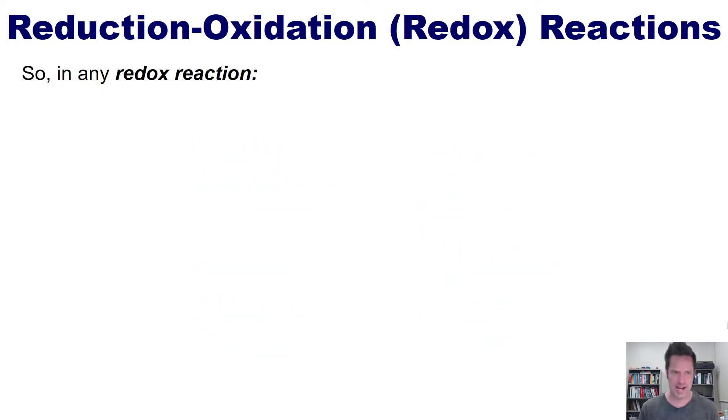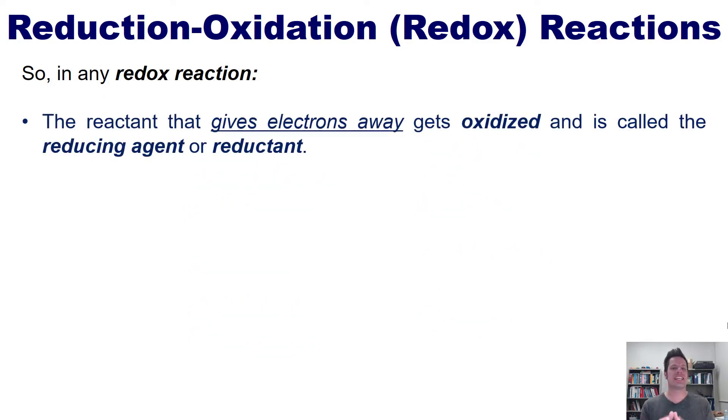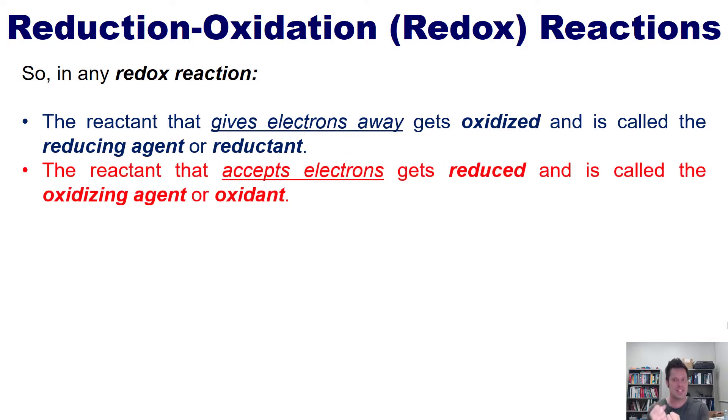So in any redox reaction, the reactant that gives electrons away gets oxidized and is called the reducing agent or reductant. The reactant that accepts electrons gets reduced and is called the oxidizing agent or oxidant.